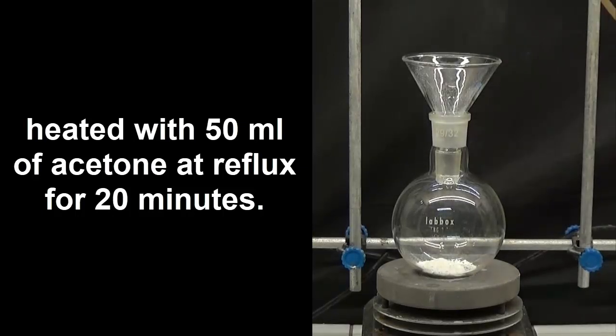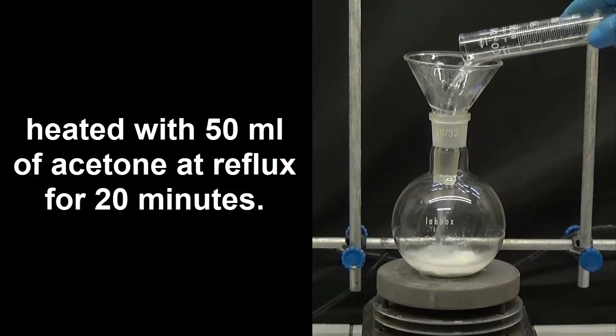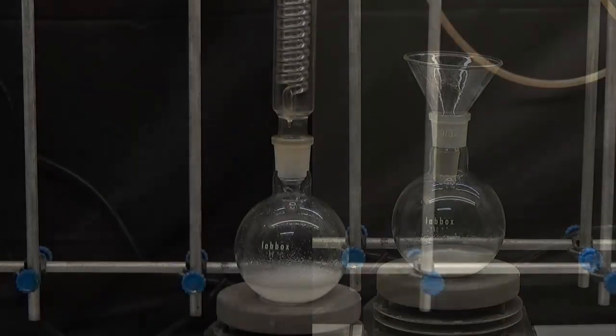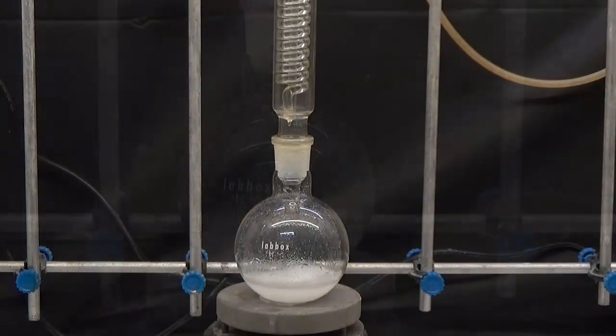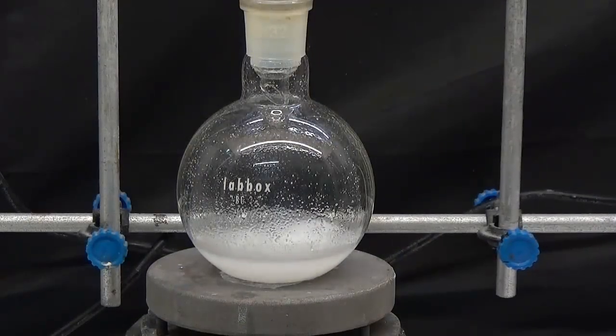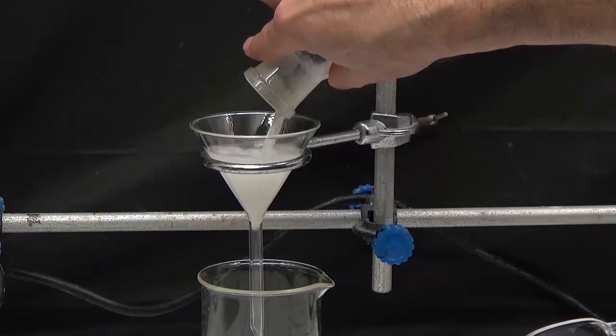The crushed powder is heated with 50 ml of acetone at reflux for 20 minutes. Let cool and filter for removal of insoluble materials.